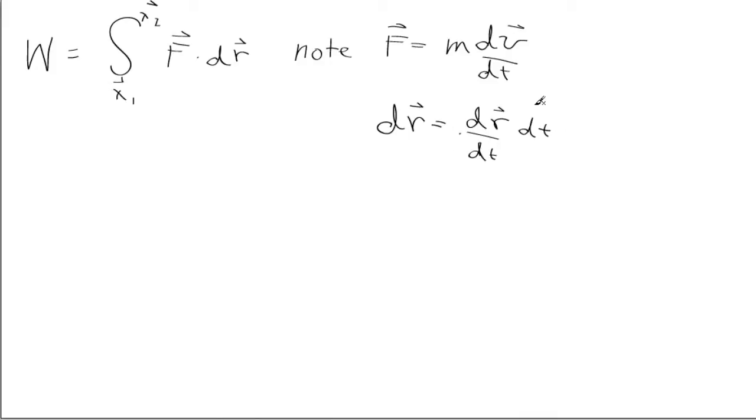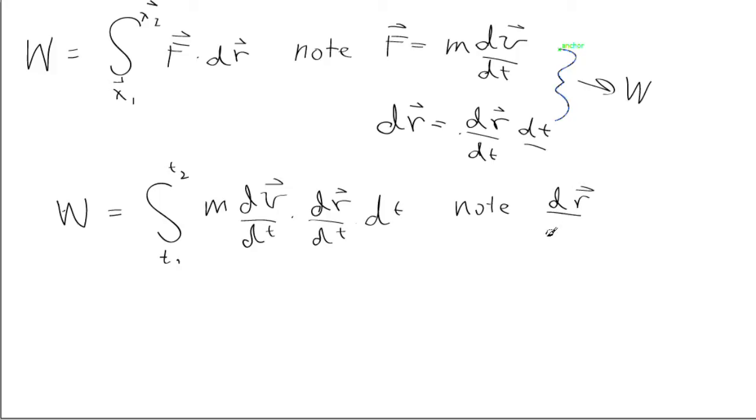Plugging both of these into the definition for work gives work is equal to the integral from now t1 to t2, since t is our differential, of m dv dt dotted with dr dt times dt. But we note again that dr dt is the definition for the velocity v.